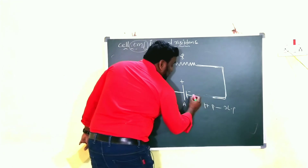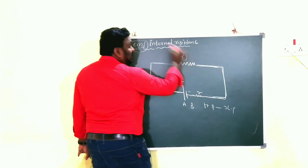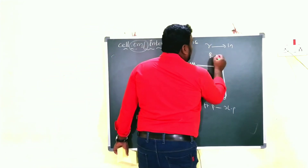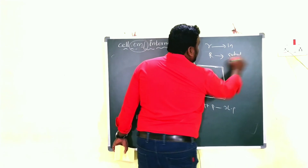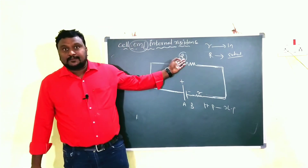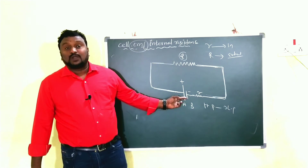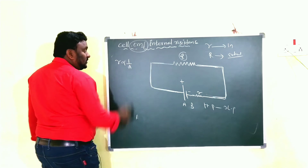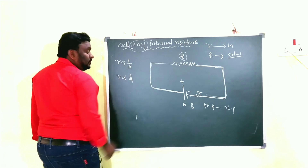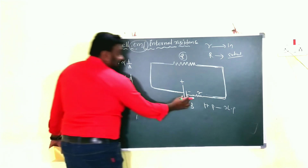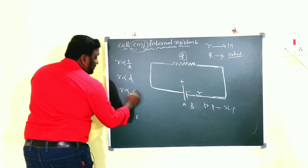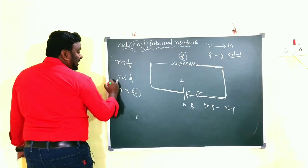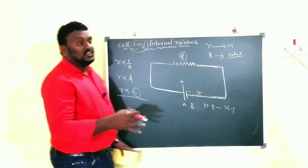In circuits, small r denotes internal resistance and capital R denotes external resistance. The internal resistance depends on several factors: r is inversely proportional to the area of the plates (r ∝ 1/A), directly proportional to the distance between the two plates (r ∝ d), and directly proportional to the concentration of the electrolyte (r ∝ c).